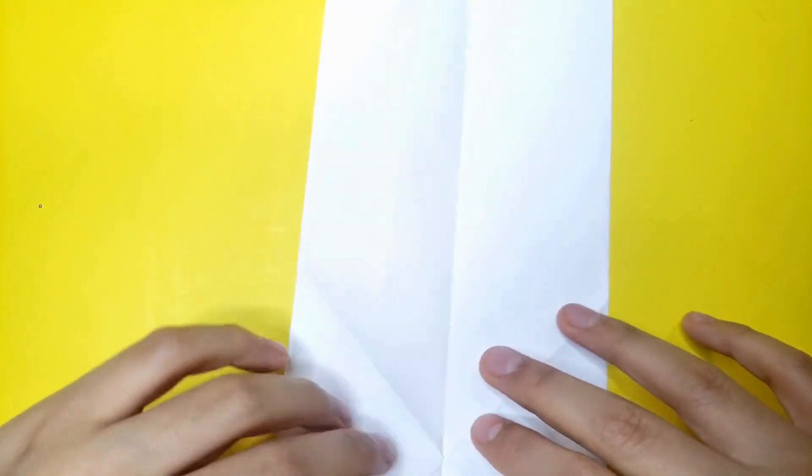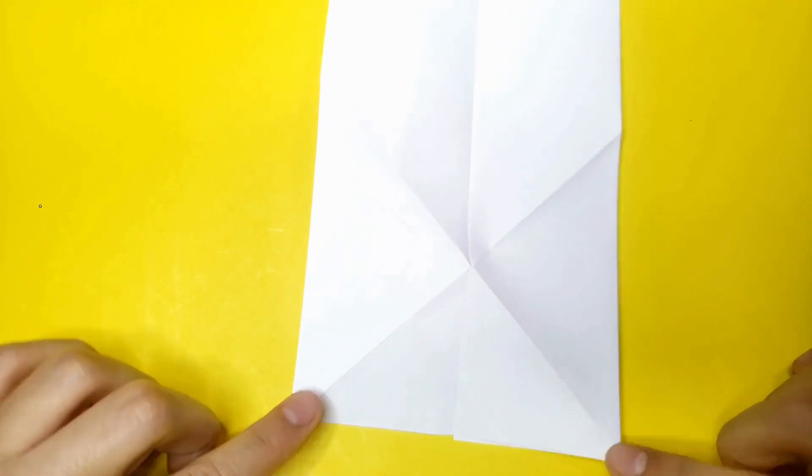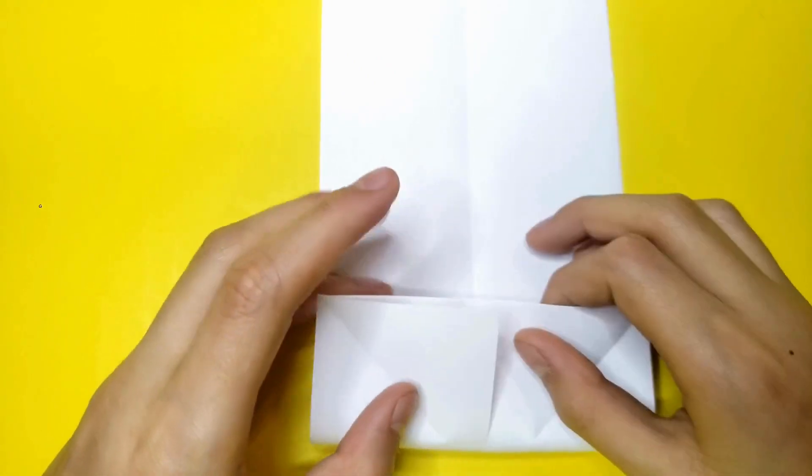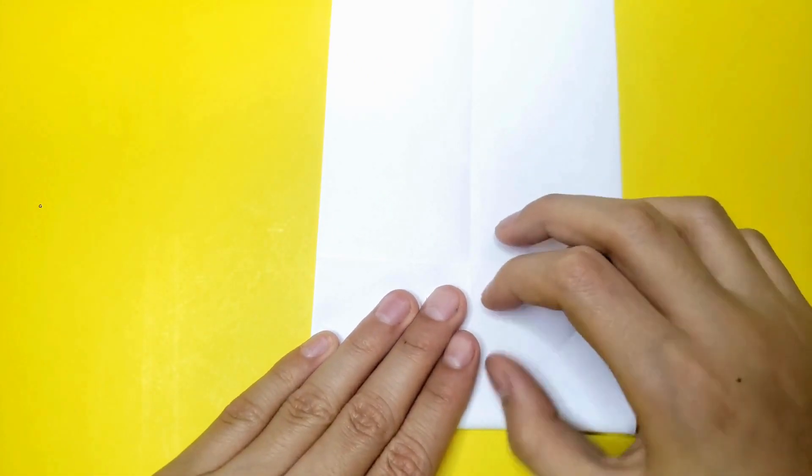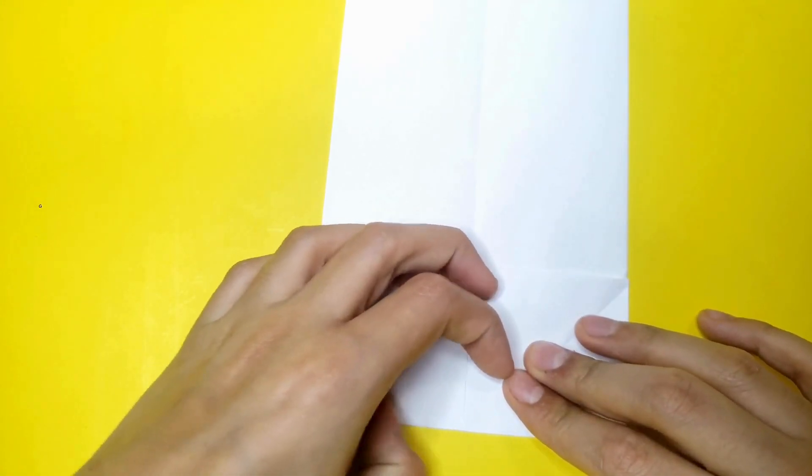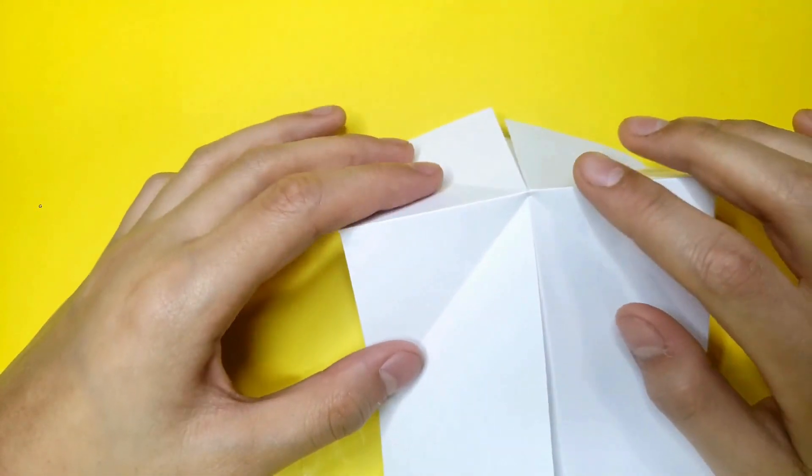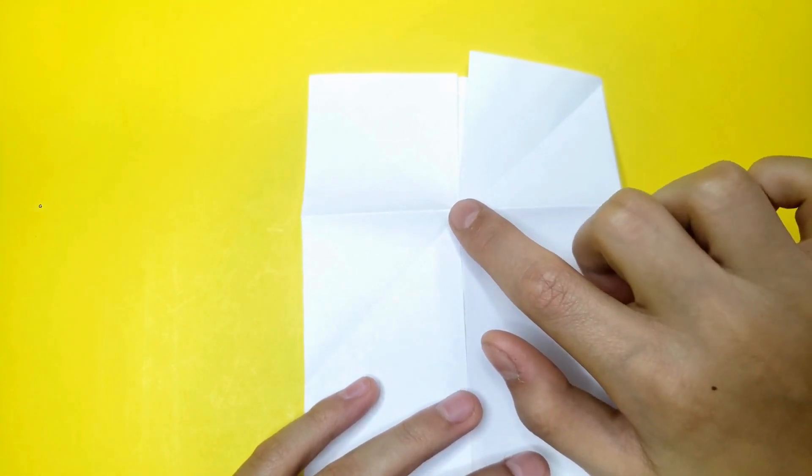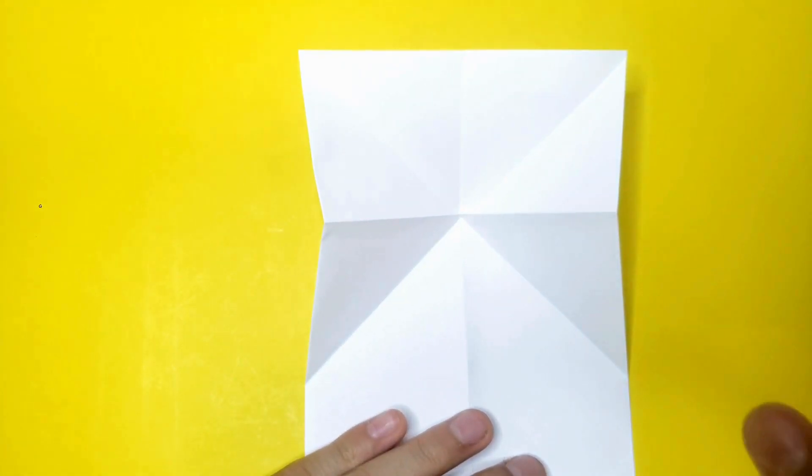Now flip it over and fold these two points to this point. After you do that, it should be standing up. Now push it down so it can pop up like that.